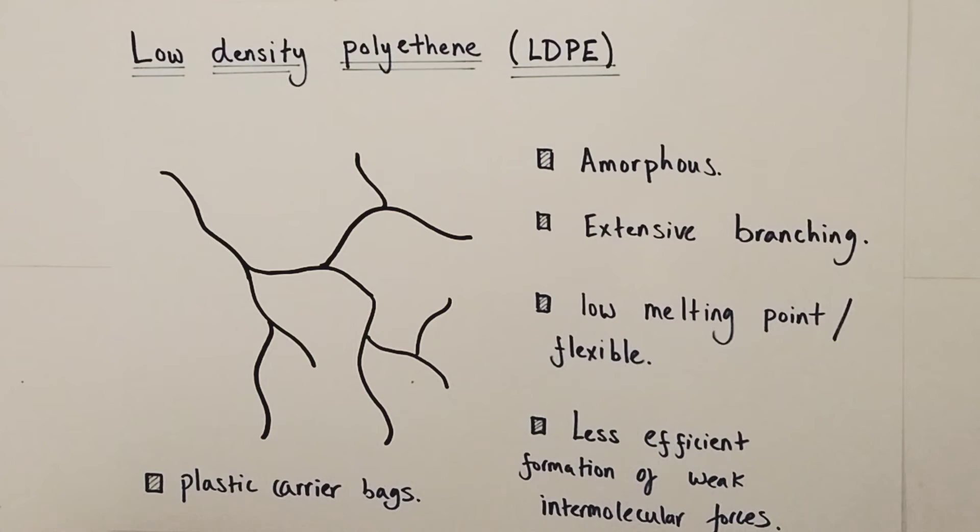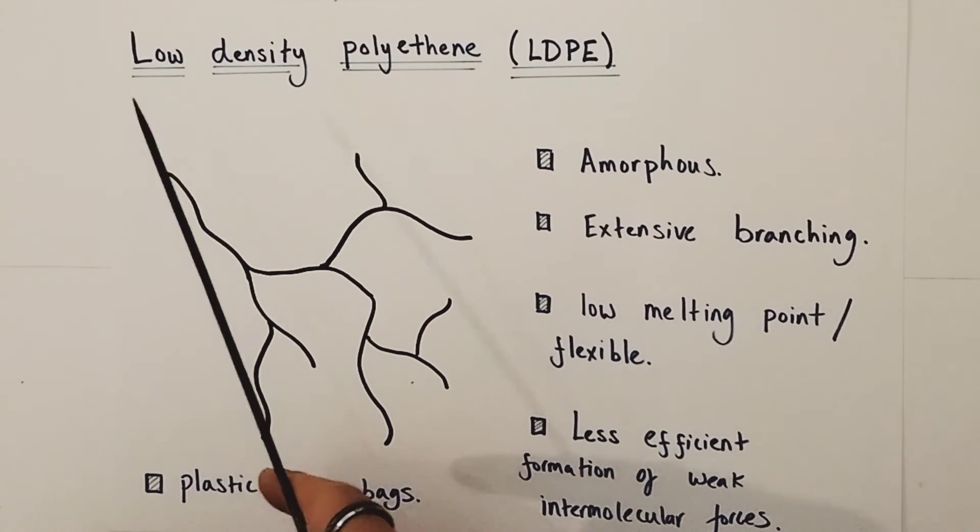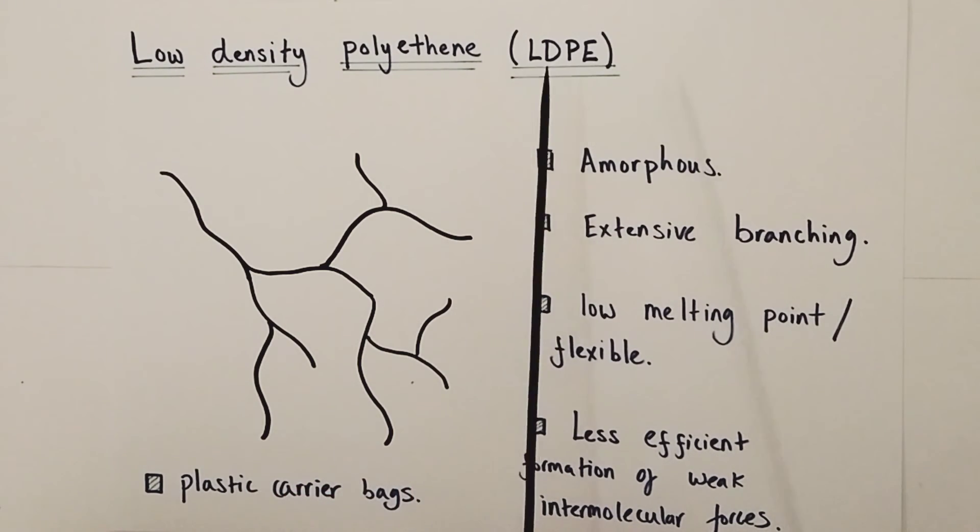So the first form of polyethene I'll take you through is known as low-density polyethene or LDPE for short. Now this is formed industrially under relatively high temperature conditions, 200 degrees Celsius, using an oxygen initiator.